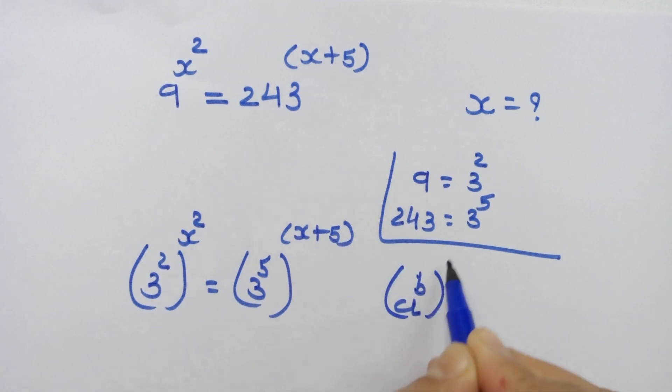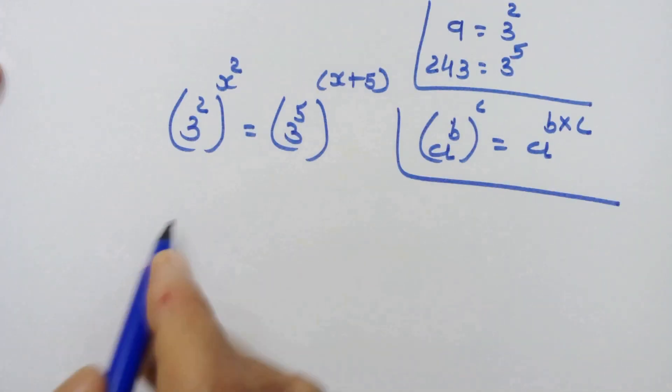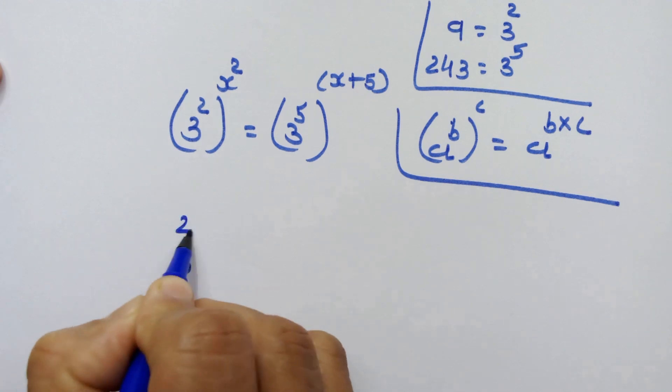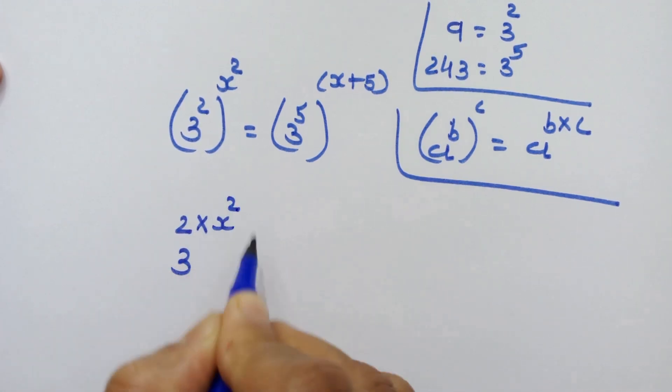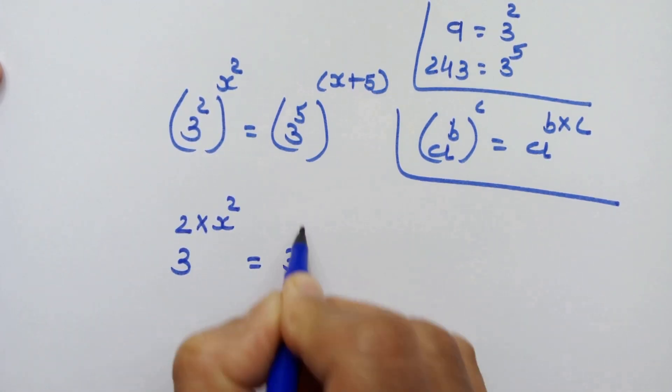So let's use this rule on both sides. We have 3^(2×x^2) = 3^(5×(x+5)).